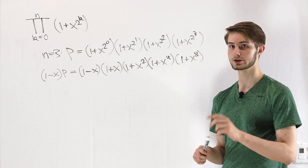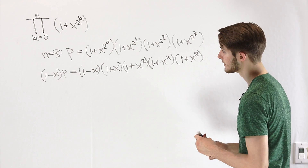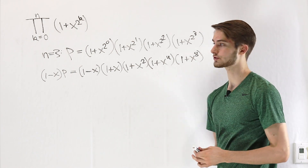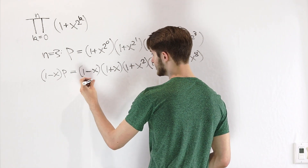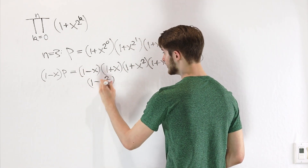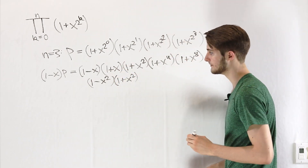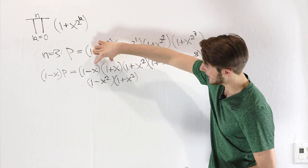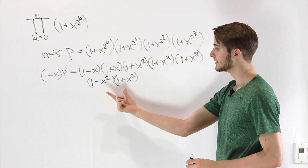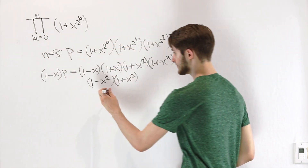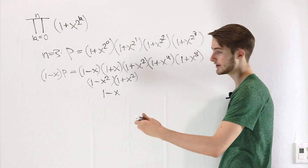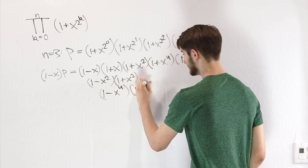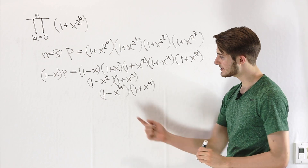Now let's look at this product a little more closely, starting with the first two factors. What is (1 minus x) times (1 plus x)? That's actually the factorization for a difference of squares. We can write (1 minus x) times (1 plus x) as 1 minus x squared. What happens when we multiply that by the next term? (1 minus x squared) times (1 plus x squared). Well, that's exactly the same thing, but instead of x we have x squared — still the formula for a difference of squares.